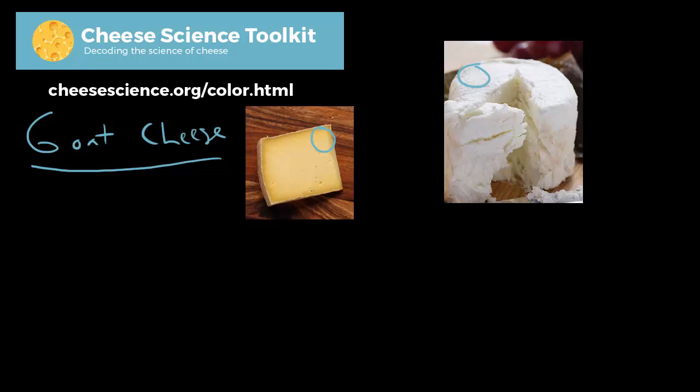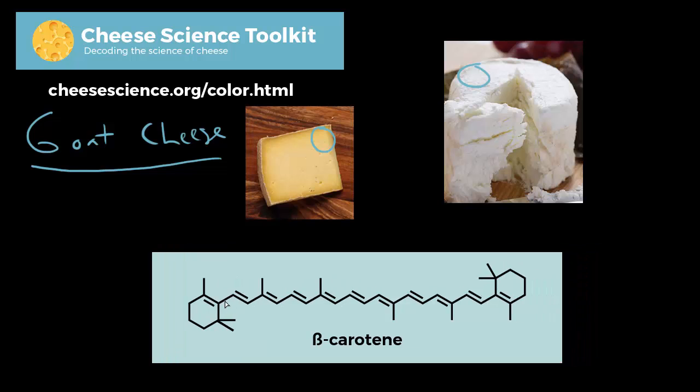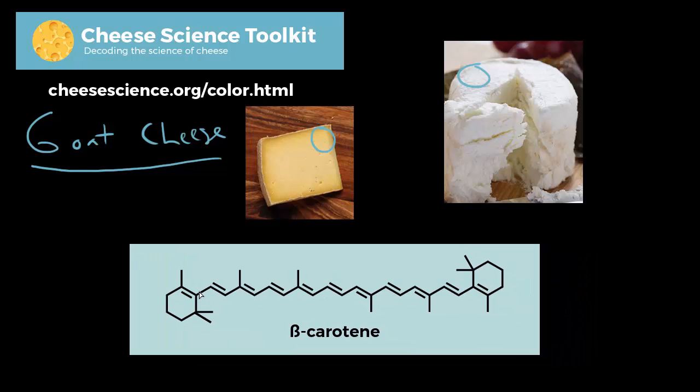If everyone remembers, it comes from a compound called beta-carotene. Here is beta-carotene right here. We talked a little bit about how this goes into the fat of the milk, and then that fat is concentrated when you make cheese. That yellow color comes out.